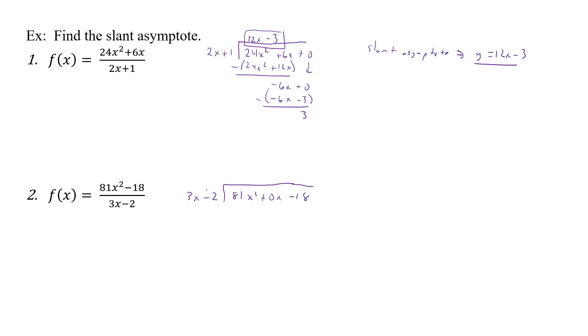So 3 times what gives us 81? Well 3 times 27, and then times x. So that's going to give us 81x squared, and then minus, and that's going to give us 54x.